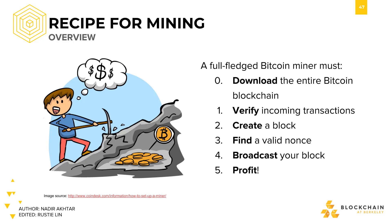Step 3, we would then find the proof of work, aka a valid nonce that solves the partial pre-image hash puzzle. Step 4 is to broadcast the block if we haven't seen any competitor blocks yet.